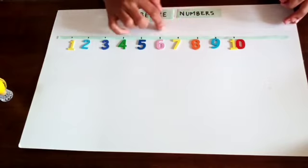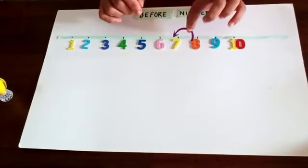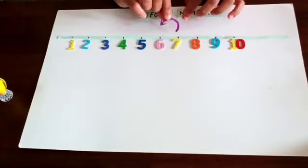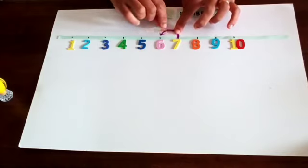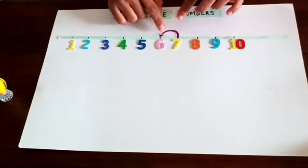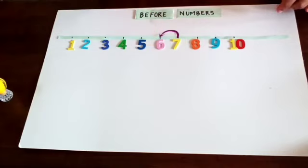One step backwards. If I have an arrow with me, I am going to jump backwards one step. What is that number? Number 6.